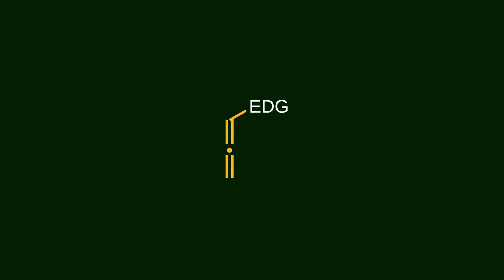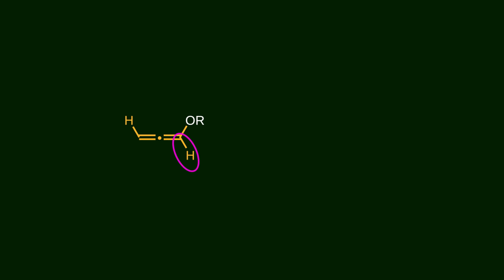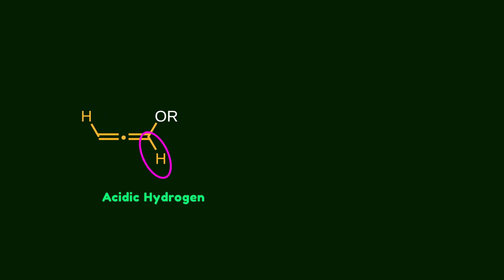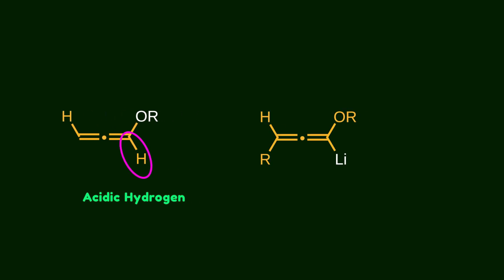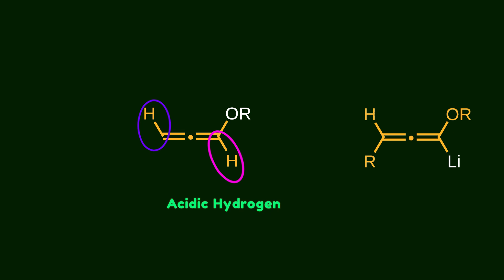Donor-substituted allenes exhibit a completely different reactivity pattern. These substituents push electron density toward the central carbon atom, making it more nucleophilic and capable of attacking electrophiles. At the same time, the terminal carbon can act as an electrophilic site and be attacked by nucleophiles. Among the various donor substituents, oxygen-substituted allenes are of major importance. A key feature of these compounds is that the carbon-hydrogen bond adjacent to the oxygen exhibits relatively high acidity, allowing for smooth lithiation followed by reactions with a wide range of electrophiles. Another interesting feature of alkoxy allenes is that this hydrogen atom is also acidic, making this building block extremely valuable for constructing complex and challenging targets.